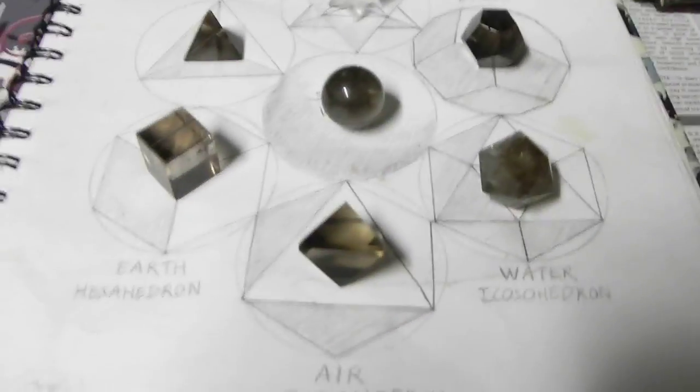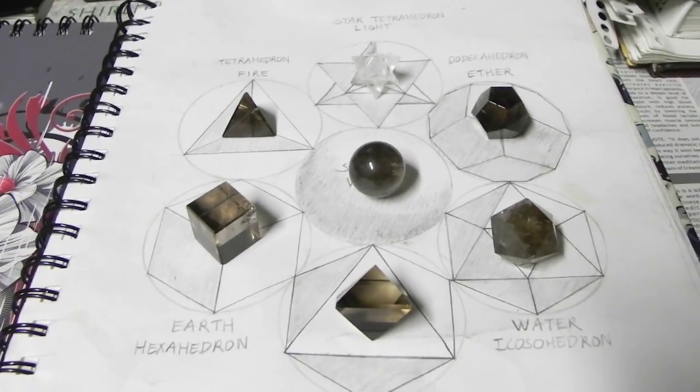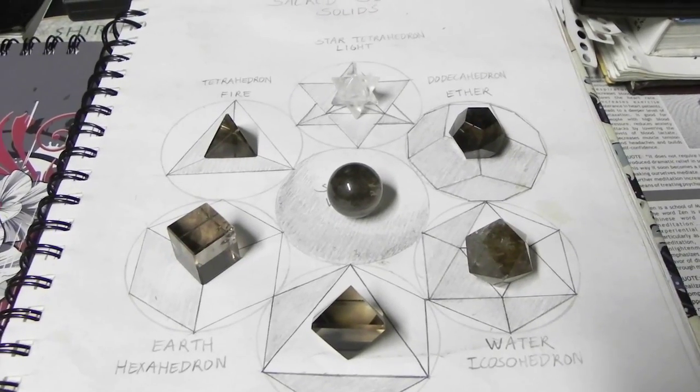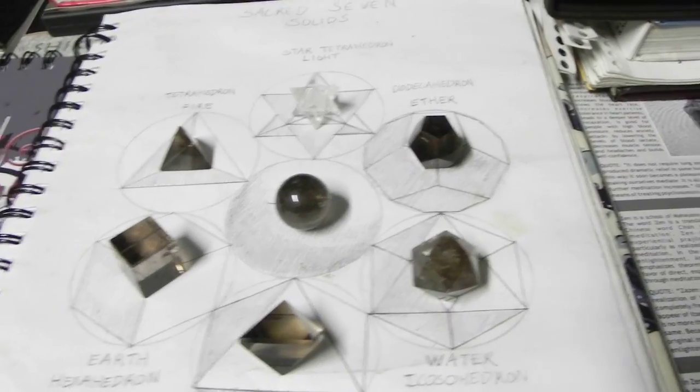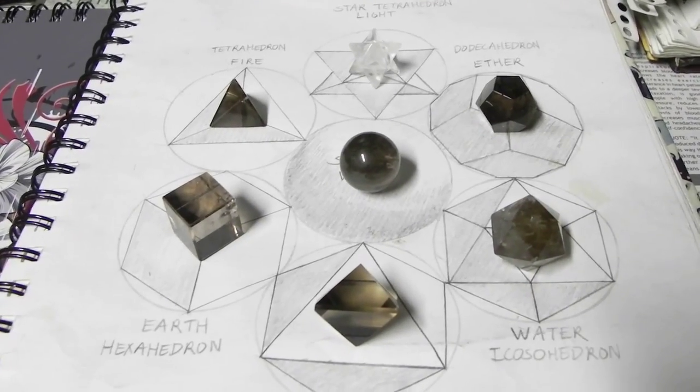Hello, this is Jell-El. Today I want to be talking about the five platonic solids plus the other two solids that I think are very important and their correlation to spiritual alchemy and crystal work.